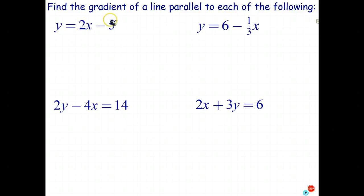Okay, so let's say we're given the equation of this line. And here you're being asked to find the gradient of a line parallel to it. Without even knowing where the line is, because you know that parallel lines have the same gradient. Since the gradient of this line is 2, the gradient of a line parallel to it is also 2.